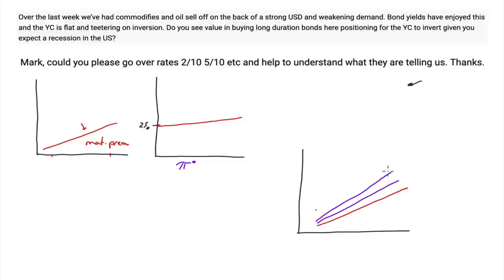If the central bank begins to act, the short end of the curve will begin to rise with the raising rates, and some inflation expectations will start to moderate. As they increase rates further, at some point there will be a belief that inflation is going to come out of the curve, so you get flattening — the long end coming down and the short end going up. This is what we've seen over the last three weeks: a twist of the curve.